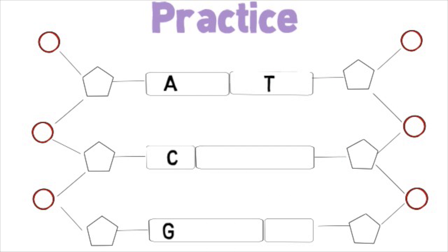According to Chargaff's rules, adenine will pair with thymine, and cytosine will pair with guanine. So the second strand will contain the nitrogen bases T, G, and C.